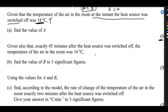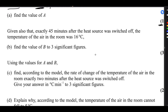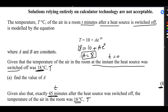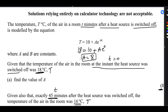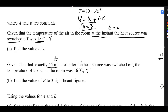For the second part, given also that exactly 45 minutes after the heat source is switched off, the temperature of the air in the room is 16 degrees Celsius, find the value of B. So we will substitute these values. We already got the value of A as 8. By substituting these two values in the above equation, you can get the value of B.